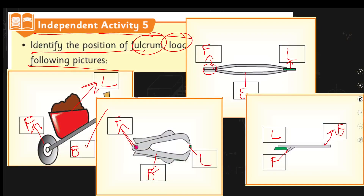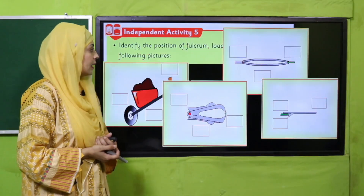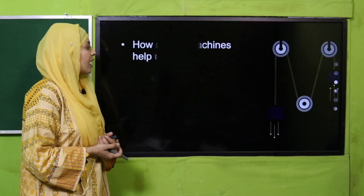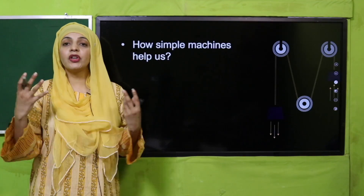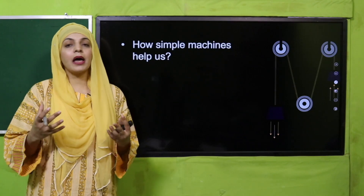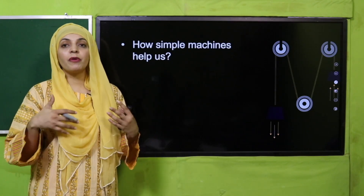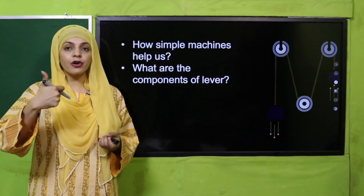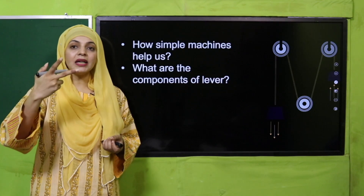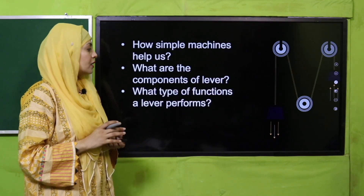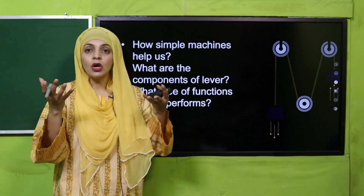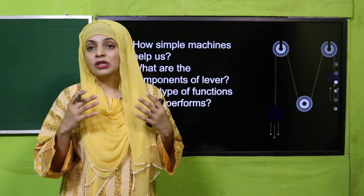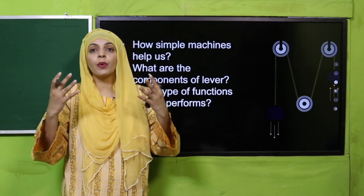Pause the video and complete the activity. Now let's move to the evaluation. How do simple machines help us? They reduce our effort, save our time, and we can easily perform our work. What are the components of a lever? Effort, load, and fulcrum. What functions does the lever perform? It helps us lift heavy loads, move heavy loads, and it changes the direction of the force, which makes work very easy for us.